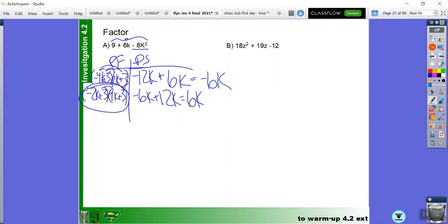So what I could have also done is I could have used the same binomial pairs that Channing has, but I could reorder it and say 3 minus 2k times 3 plus 4k. And that answer would be equivalent, it would be the same.